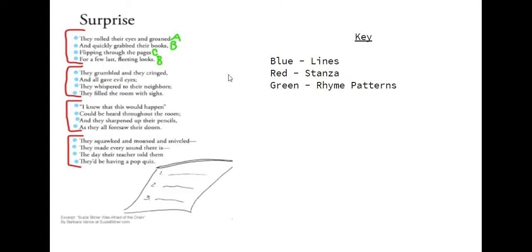What we have here, I hope you were able to identify the elements we've been discussing. If you look at the blue dots, they are indicating to you the lines of the poem. This poem has 16 lines. The red indicates the stanza. There are four stanzas in this poem. There are four lines in each stanza.